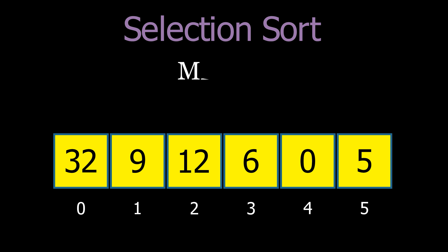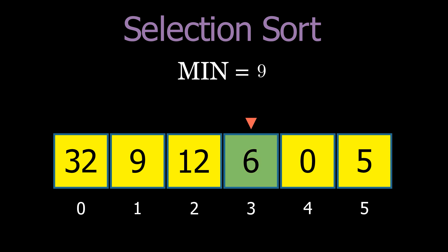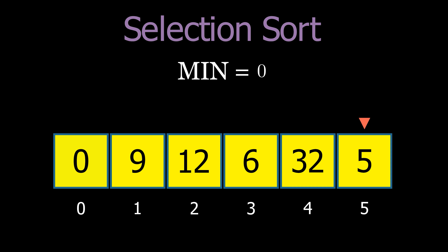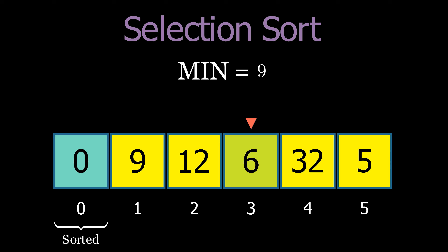Next is the selection sort. This algorithm is quite simple. It starts by finding the smallest element in the entire list and swapping it with the element in the first position. Then, it finds the smallest element in the remaining unsorted portion and swaps it with the element in the second position. This process continues, gradually expanding the sorted portion of the list while shrinking the unsorted portion.